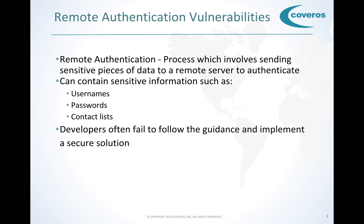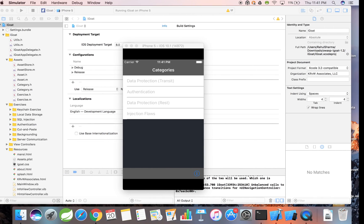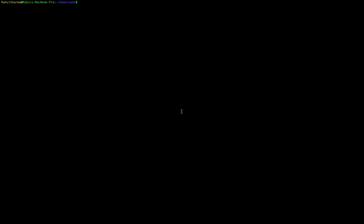Many mobile applications communicate with a remote server to access content, sync data across devices, or to access services. iGo has a mock server it can communicate with so that we can look at how we might exploit that service. In order to use that server it's necessary to install the Sinatra and the JSON gem. These gems can be installed directly from the terminal with the following command.